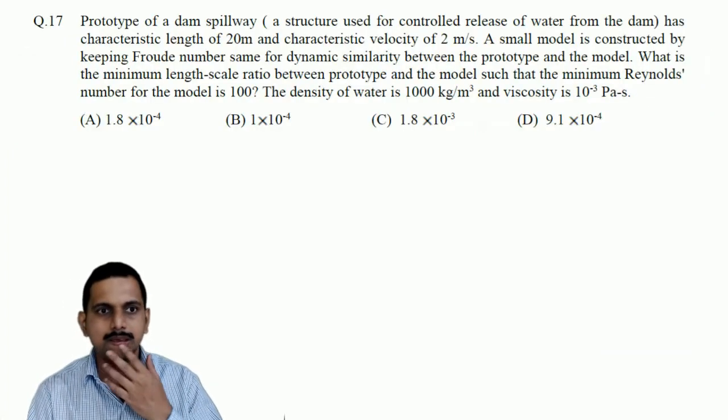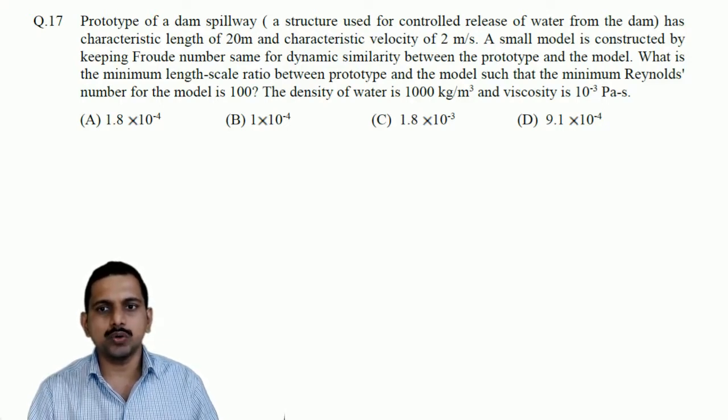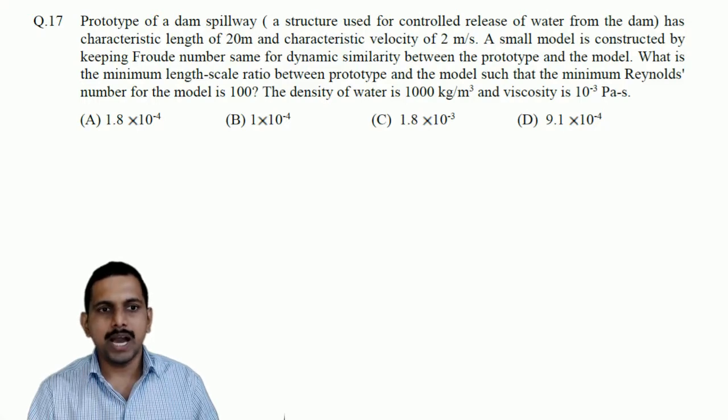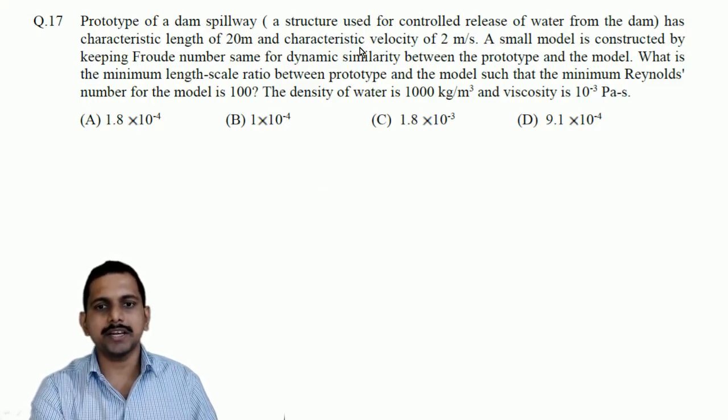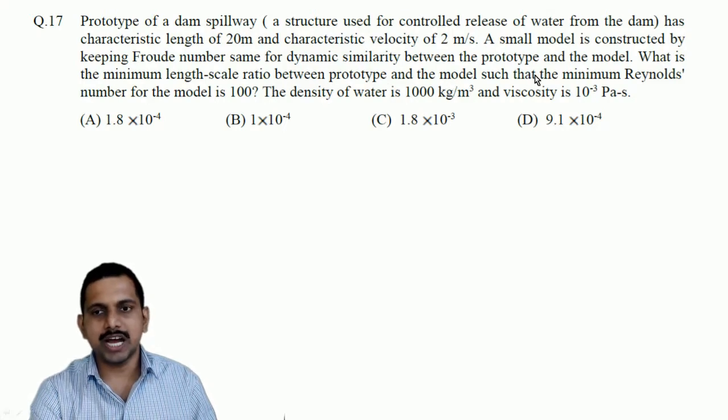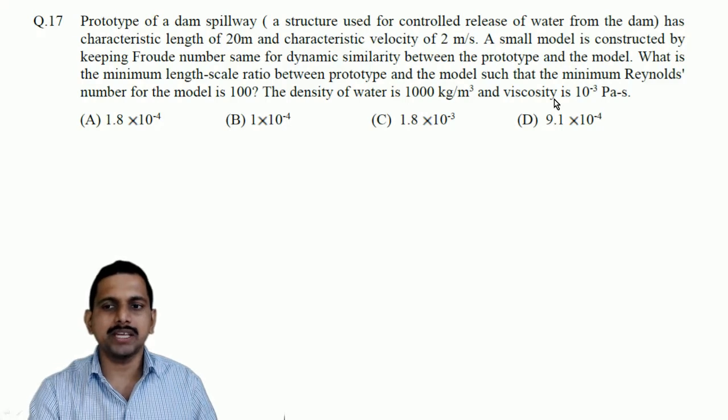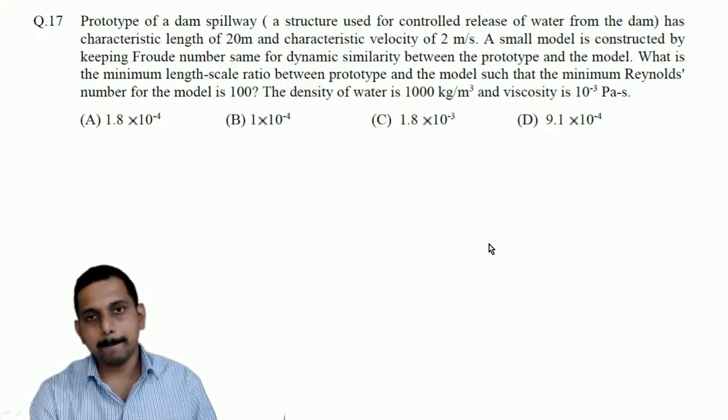Question number 17. The question is like this: Prototype of a dam spillway, a structure used for controlled release of water from the dam, has characteristic length of 20 meter and characteristic velocity of 2 meters per second. A model is constructed by keeping Froude numbers same for dynamic similarity between the prototype and the model. What is the minimum length scale ratio between prototype and the model such that the minimum Reynolds number for the model is 100? The density of water is 1000 kg per meter cube and viscosity is 10 power minus 3 pascal second.